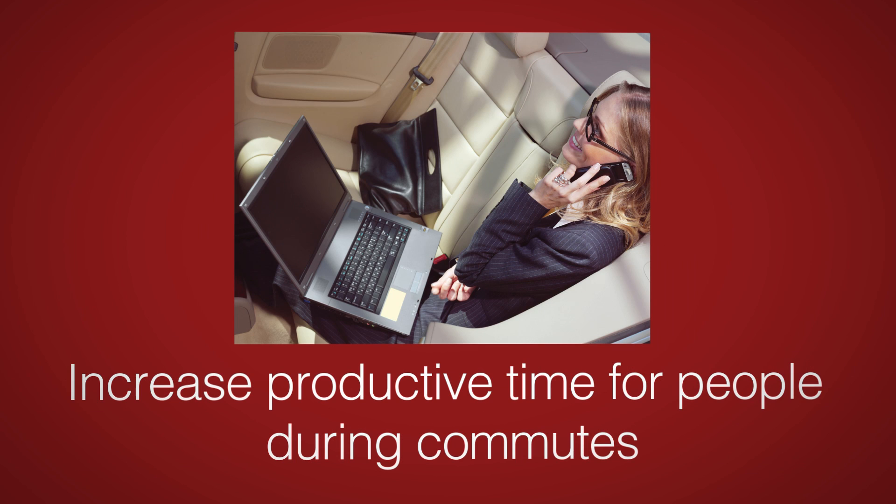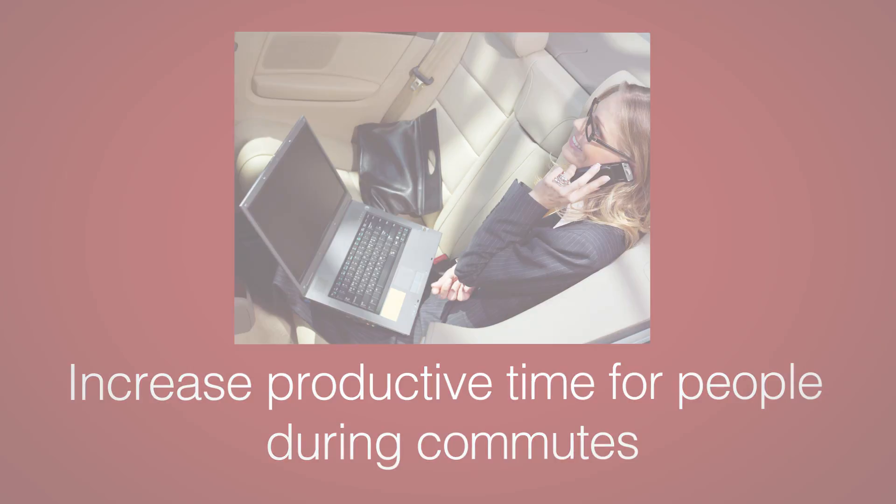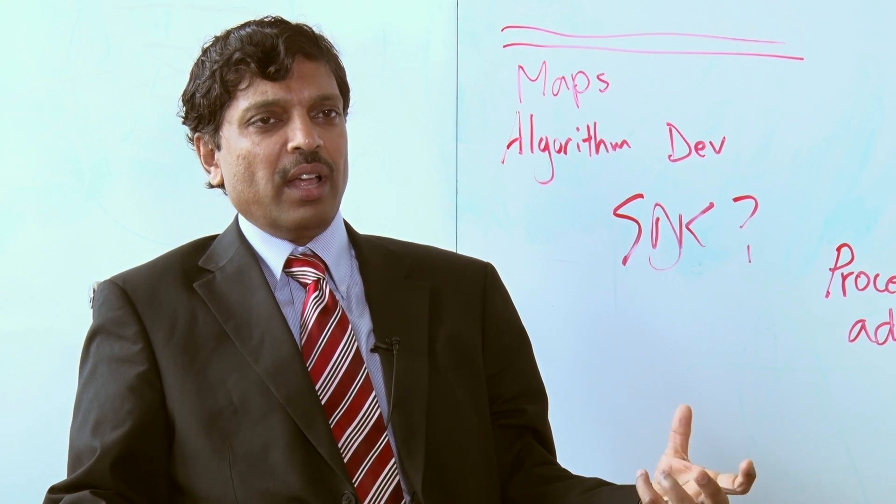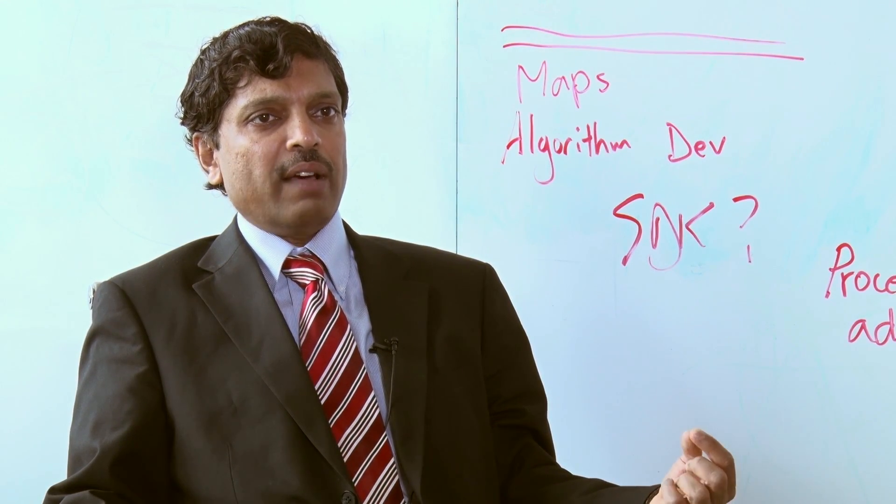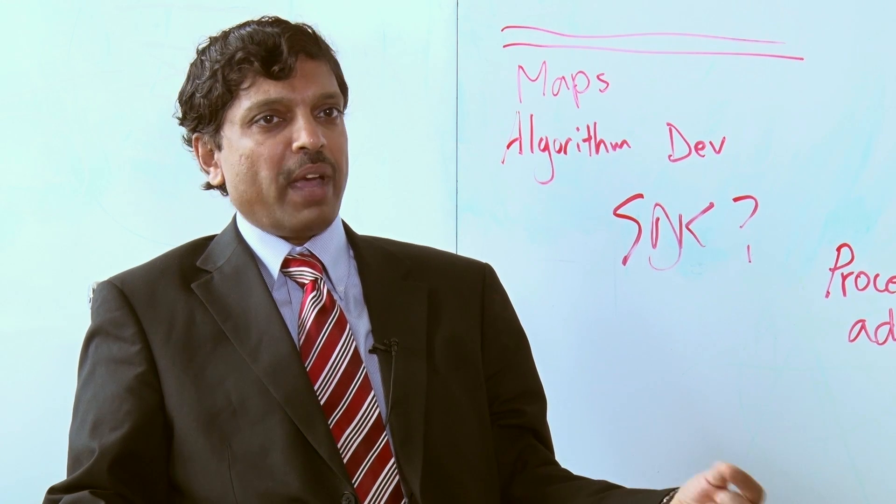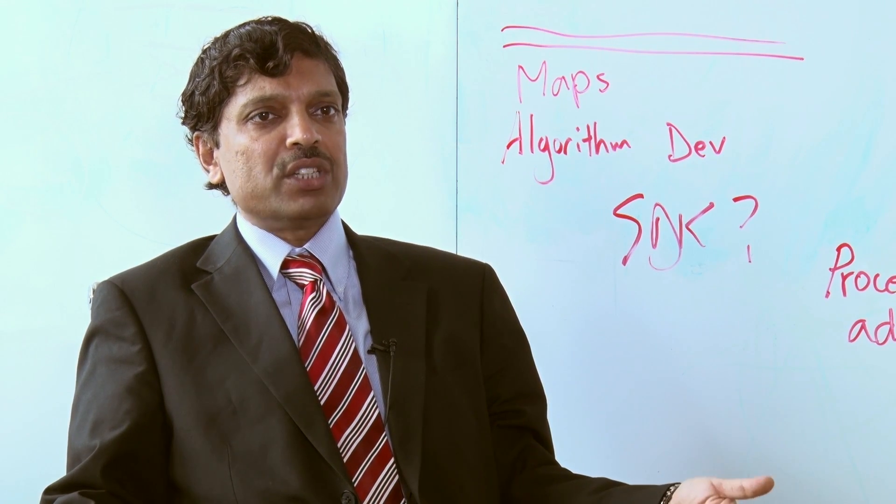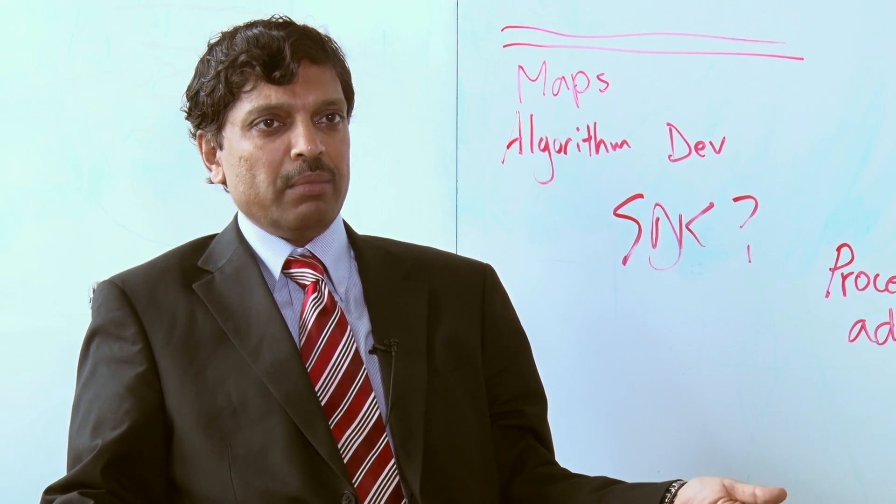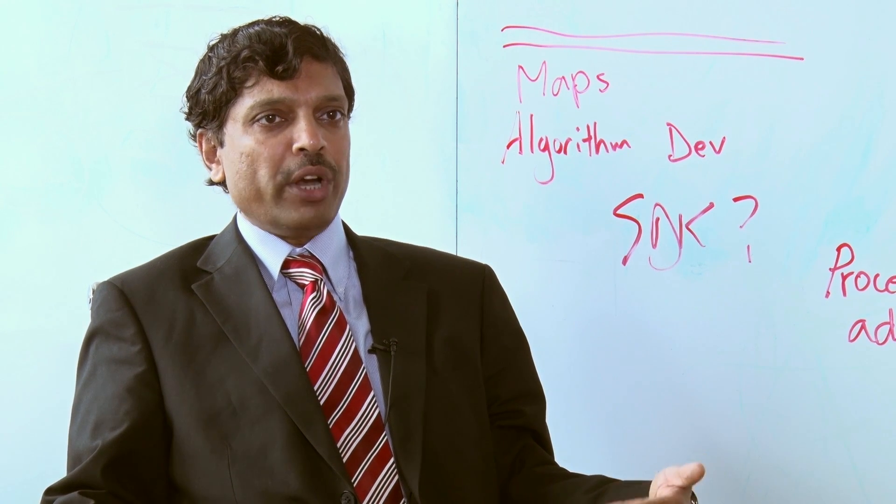Number two, the average American today commutes for about 51 minutes to and from work, and about 70% of cars have a single driver in them going back and forth. So it's basically 51 minutes of unused time, unproductive time, just getting from point A to point B.